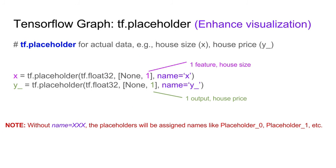For the actual data points we are going to feed into this model, we use tf.placeholder. X has a dimension of one because it's just one feature. Y_underscore, which is the actual house price, also has just one dimension. We provide names to the placeholders to prevent the system from assigning random names like 'placeholder_0' and 'placeholder_1'.